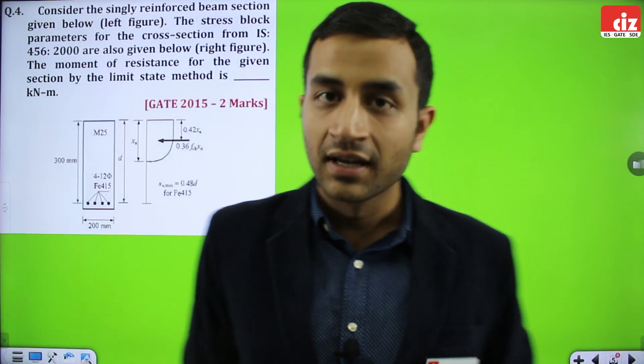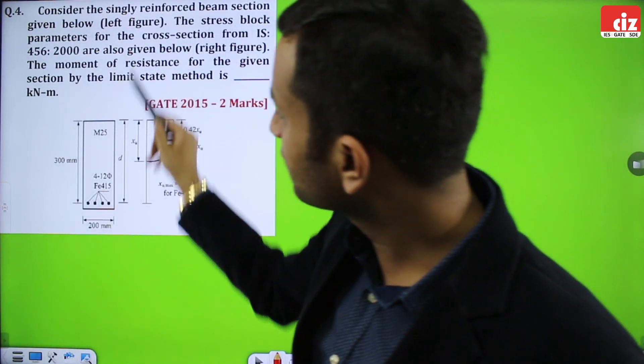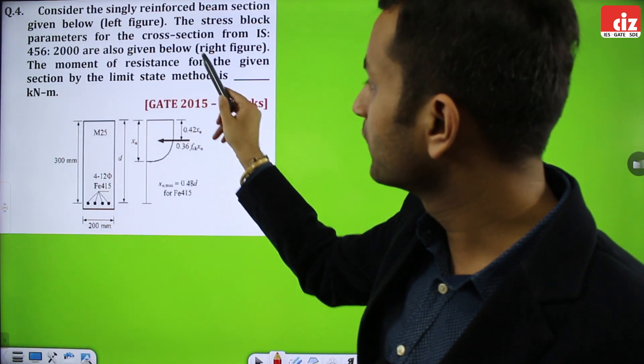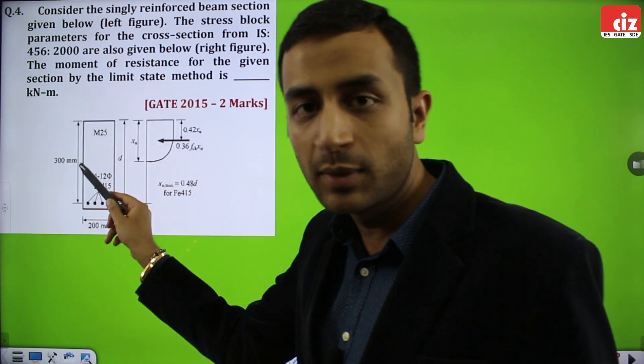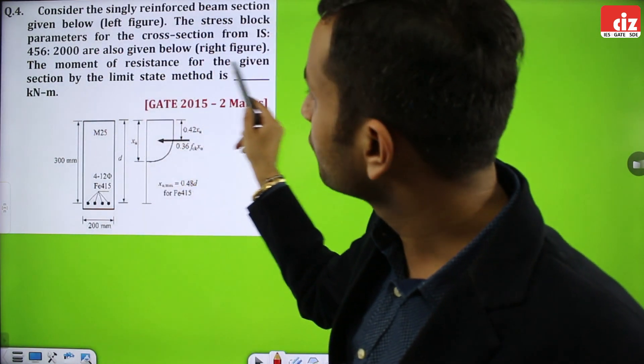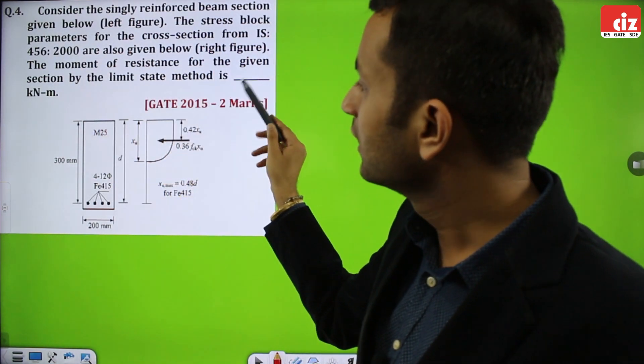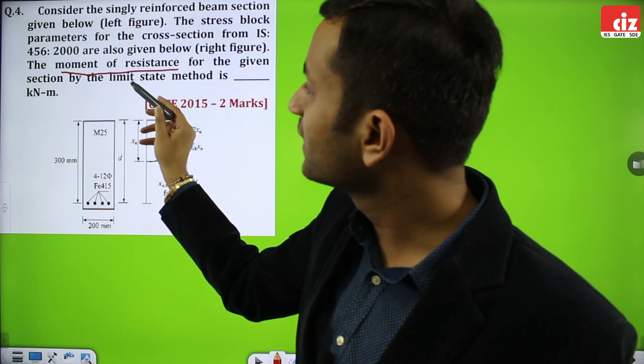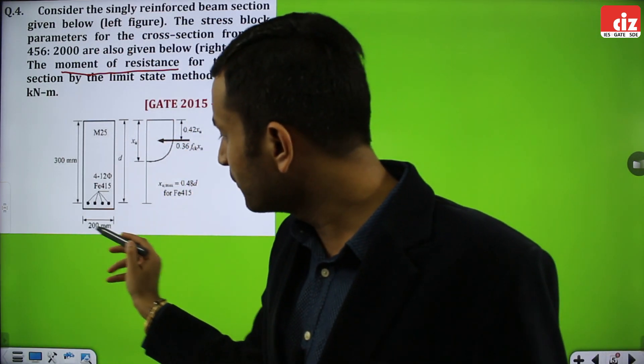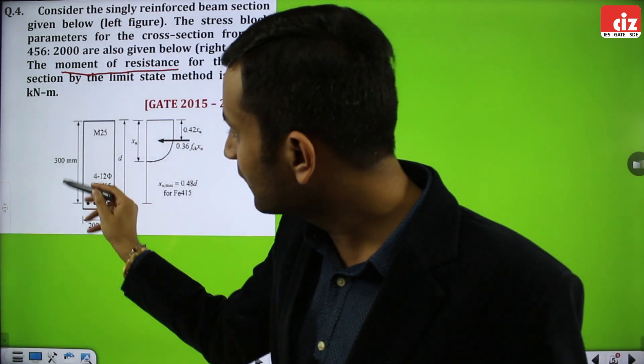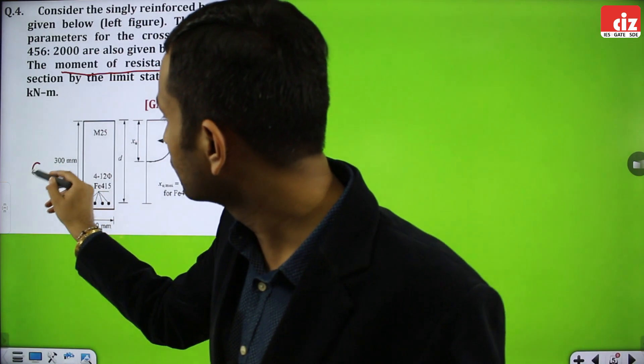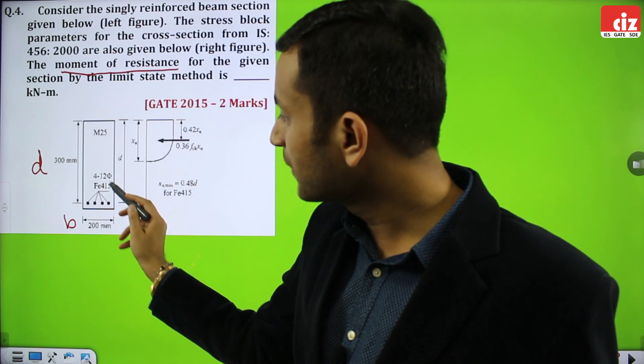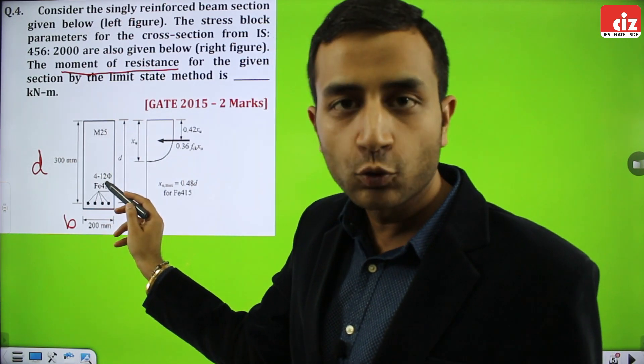Next question. Consider the singly reinforced beam section given below. The stress block parameters for the cross section from IS 456-2000 are also given below. The moment of resistance for the given section by limit state method is. Basically this is a straightforward question in which we have to find MOR, moment of resistance, as per IS 456-2000 limit state method. Here you can see width is given 200 mm, effective depth given 300 mm, FCK is M25, FY 415, and AST given 4 bars of 12 mm diameter.